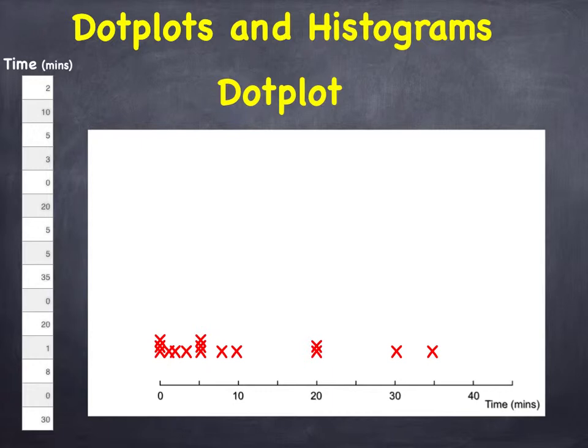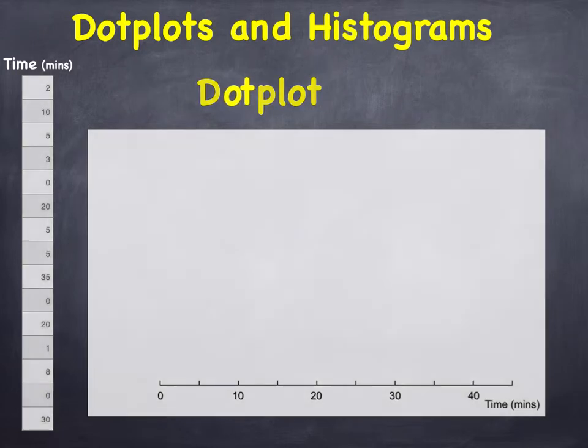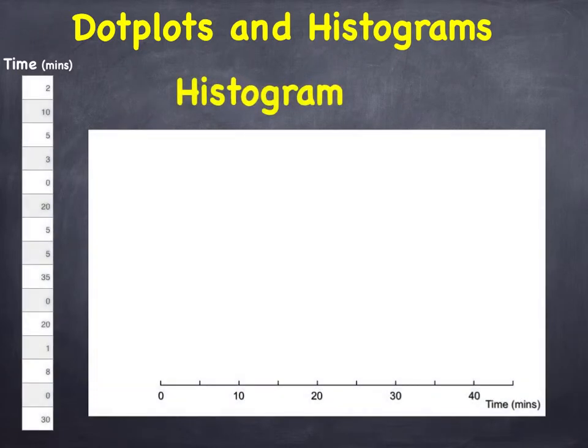I can use this horizontal scale to plot the same data as a histogram. You can think of a histogram as a wall built up with a set of identical bricks. Each brick corresponds to a value from the data set. First, I need to decide how wide to make each brick. There's no single right answer here but I'll start with a width of 5 minutes.